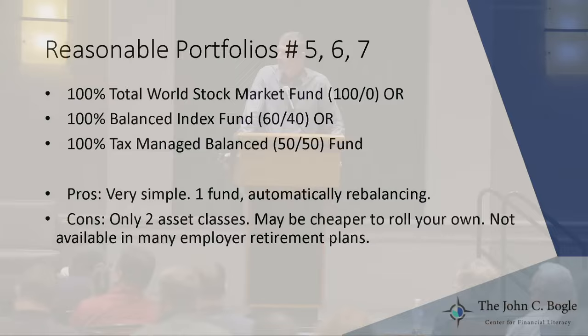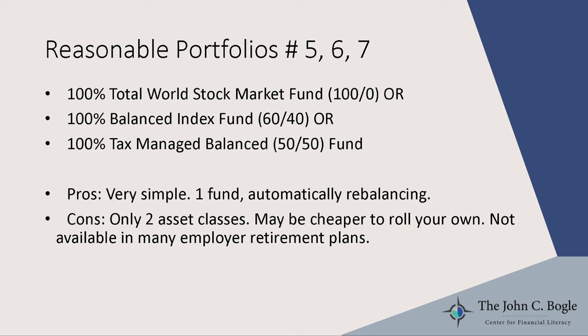Portfolios five, six, and seven are all available at Vanguard and are one-fund solutions: the Total World Stock Market fund (U.S. and international stocks), the Balanced Index fund (U.S. stocks and U.S. bonds), and the Tax-Managed Balanced fund (same thing, run differently to decrease your tax hit). The benefits are simplicity — one fund, automatic rebalancing. The downside is you're really only getting two asset classes, it might be cheaper to roll your own, and none of these are commonly available in employer retirement plans.